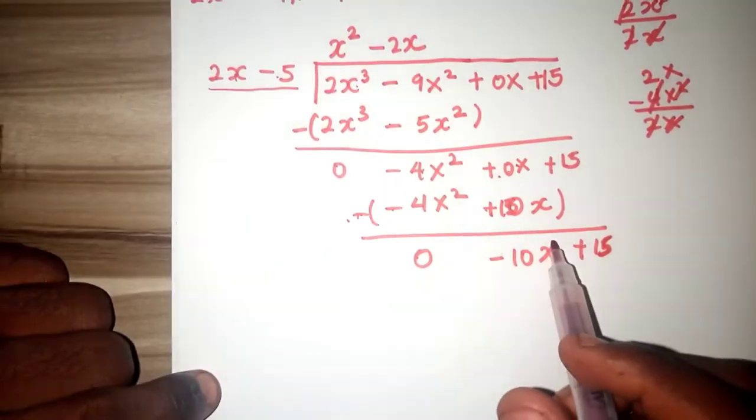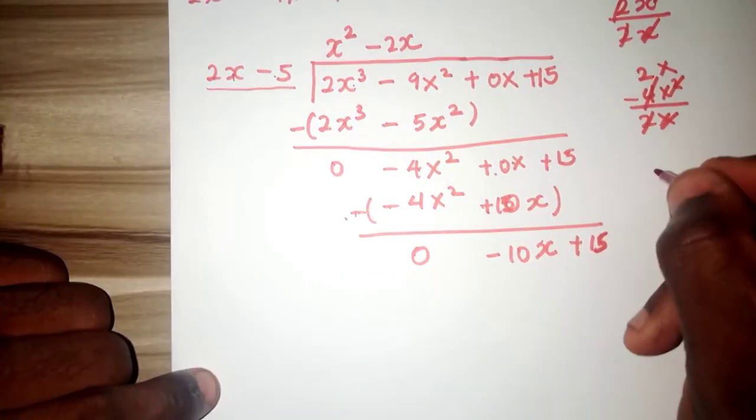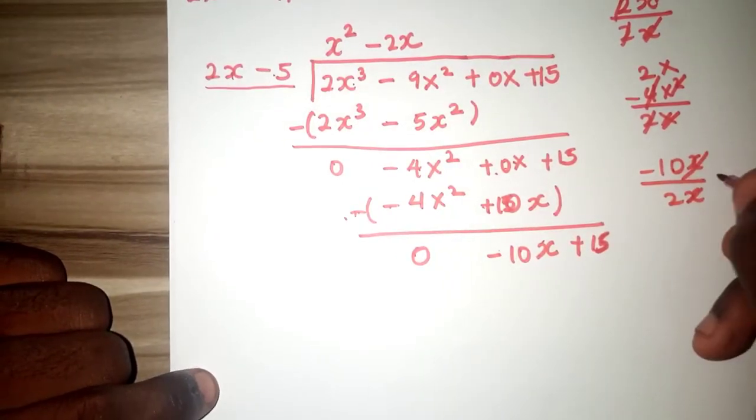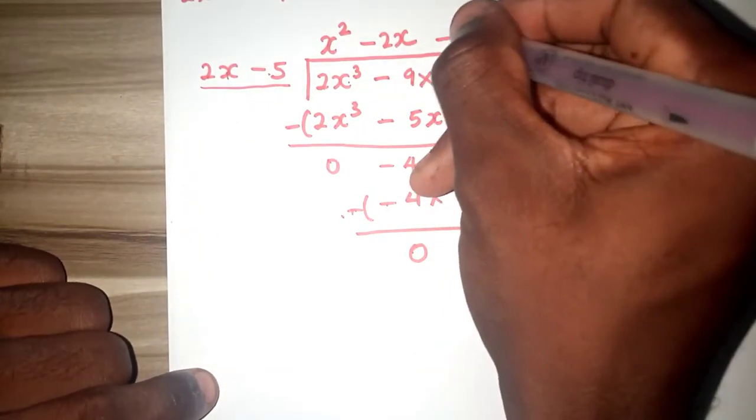The next thing for us to do is divide again, minus 10x over 2x, this will cancel this, we are having minus 5.